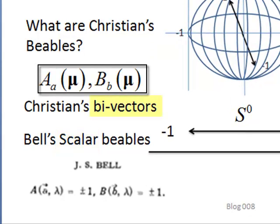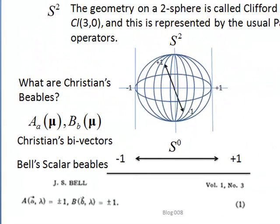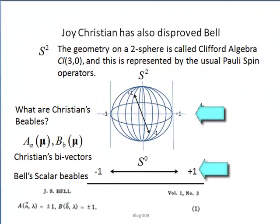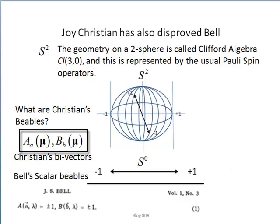Christian's beables are bivectors and trivectors relevant to the two-sphere. These two cases can be compared and contrasted. It is the bivector choice that makes the difference.